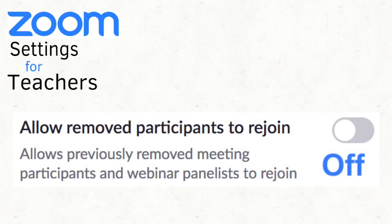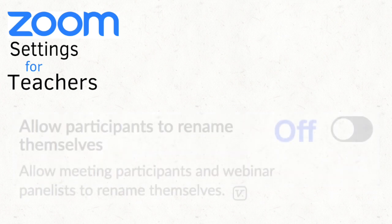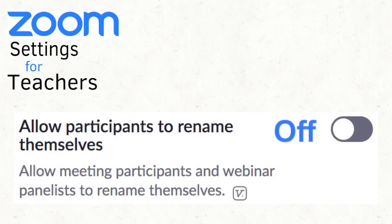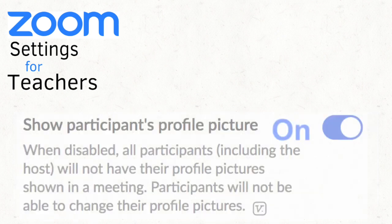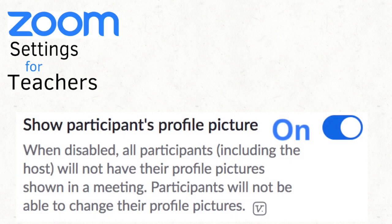I don't suggest allowing removed participants to rejoin, so turn that setting off. I like to know the name of the students in my Zoom meeting, and I don't want to have to try to figure out which nickname belongs to which student, so I turn this setting off — I don't allow participants to rename themselves. Show Participants Profile Picture — I turn that setting on. When they turn off their video, then we'll see their profile picture or their name.